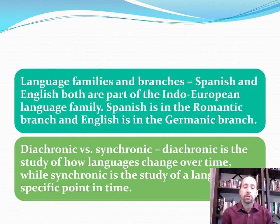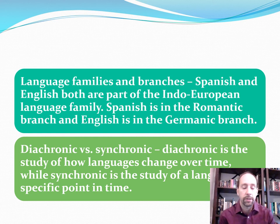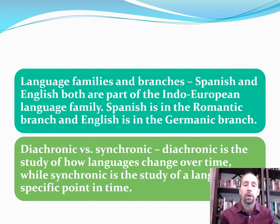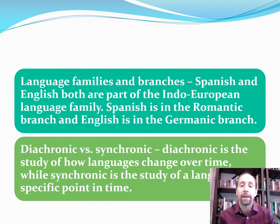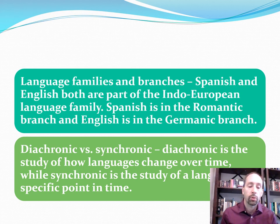Language families: Spanish and English share some similarities because they come from the same Indo-European language family, but they also have differences — Spanish comes from a Romance language and English is a Germanic language. If you're looking at a different language like Chinese, Japanese, Arabic, or Russian, make sure you know some information about that. Diachronic is the study of how languages change over time, and synchronic is the study of a language at a specific point in time. This could relate to human geography and how languages change throughout history.